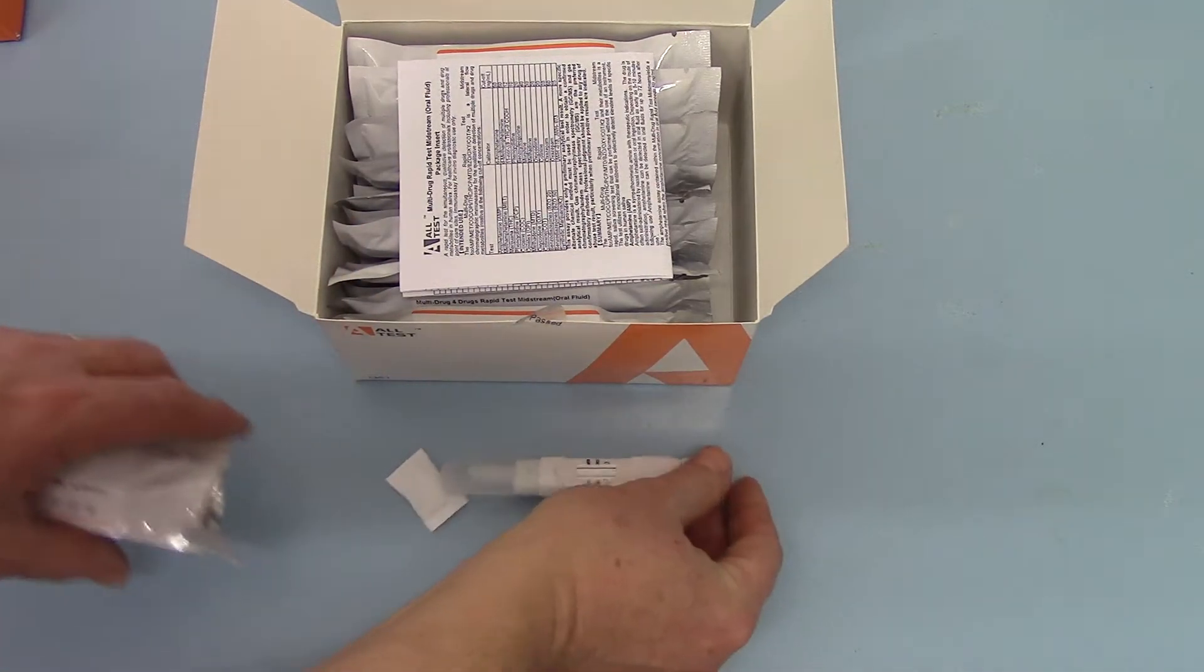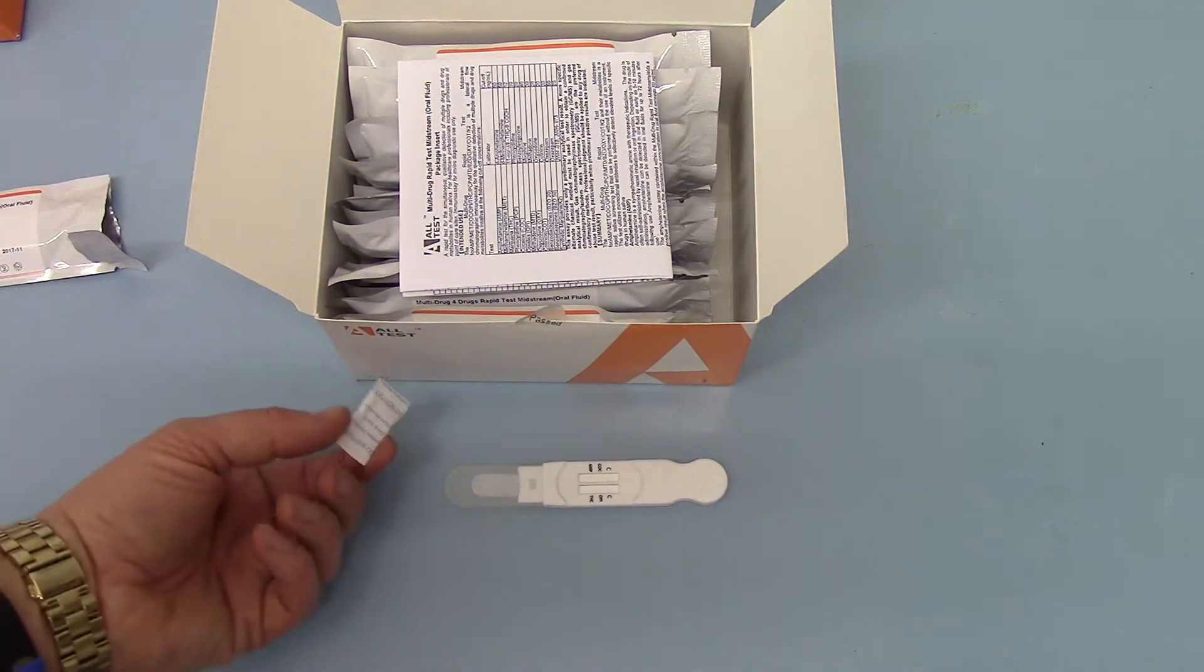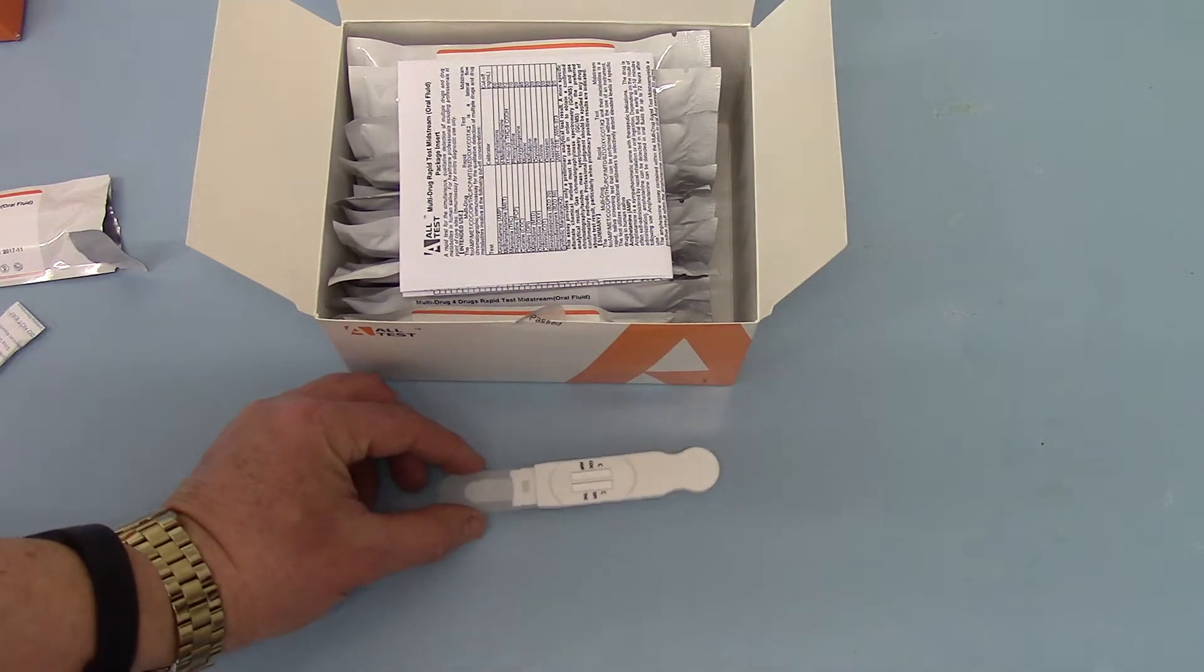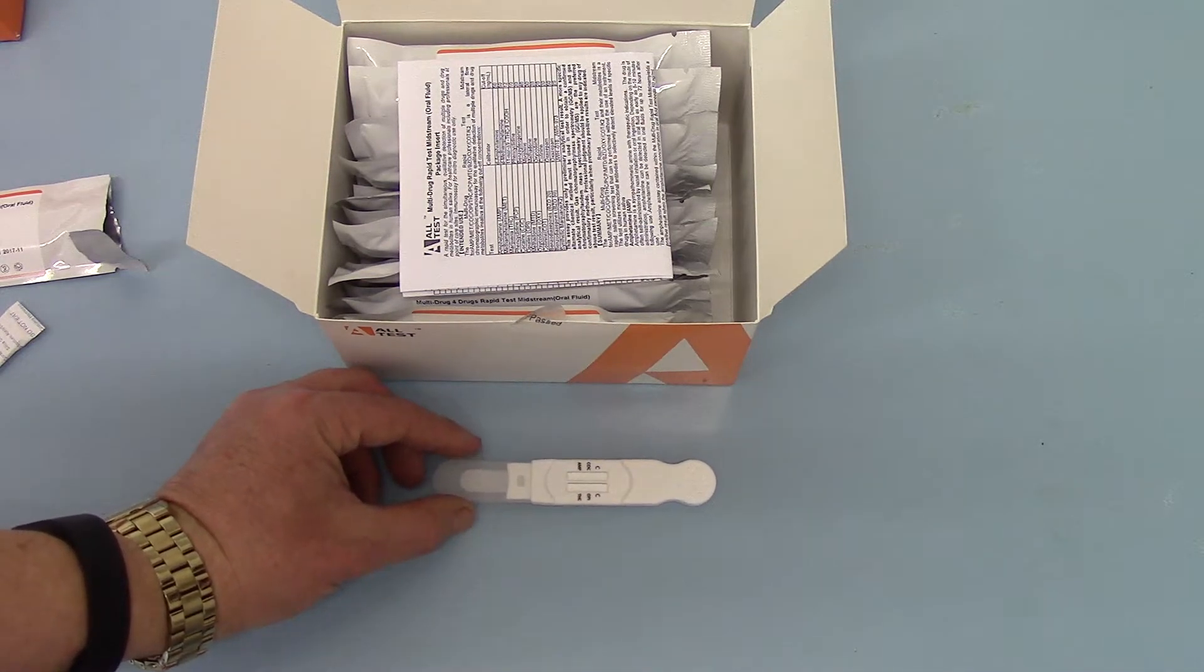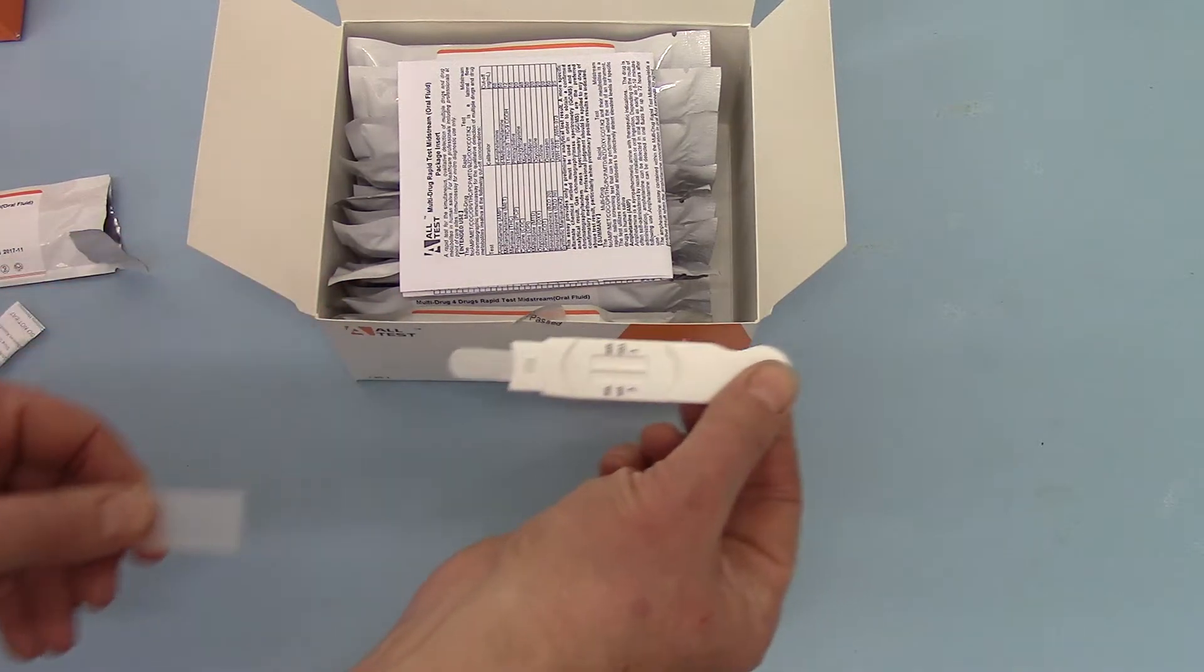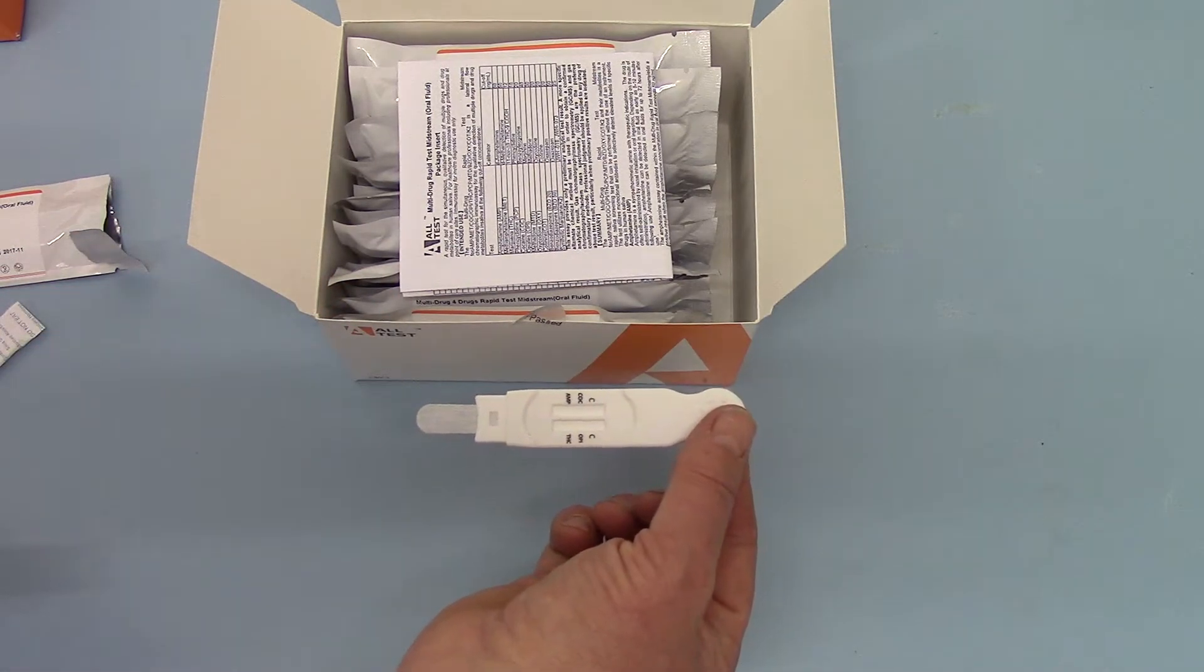What you get in each pouch is a little bag of desiccant that just keeps the cassette in peak condition and dry until it gets to you. Here you have the actual design and you'll see why that is referred to as a midstream or direct saliva.